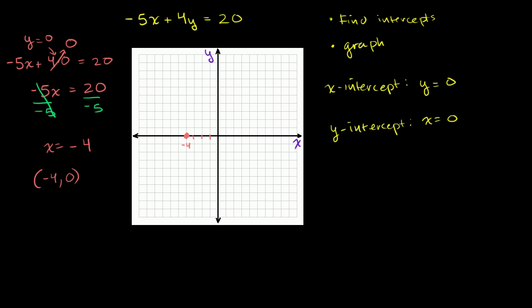Now let's do the exact same thing for the y-intercept. Let's set x equal to 0. So if we set x equal to 0, we have negative 5 times 0 plus 4y is equal to 20. Anything times 0 is 0, so you can just put that out of the way.